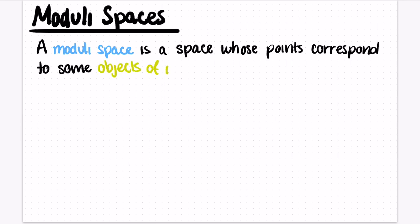Moduli spaces are spaces whose points correspond to some object of interest. As a quick example, we might be interested in smiley faces.